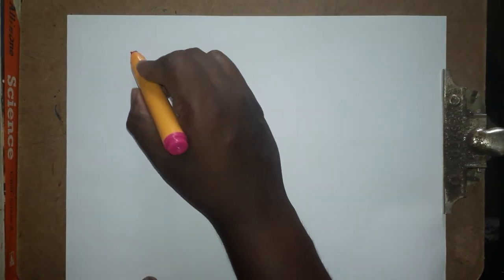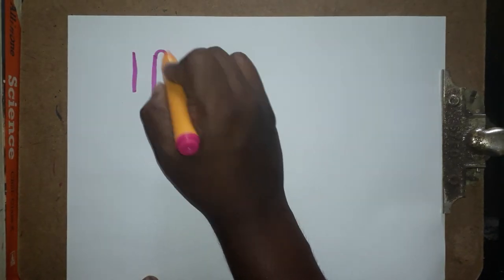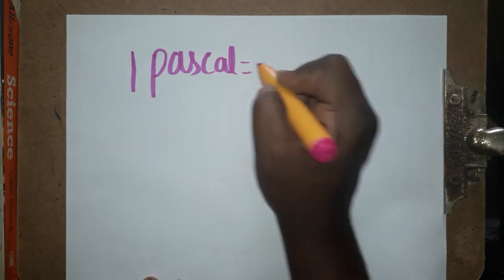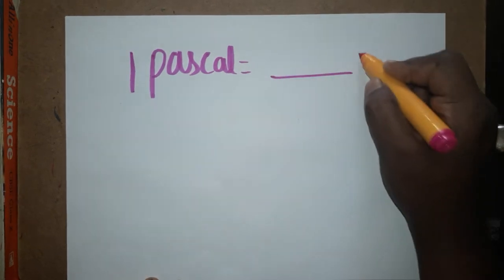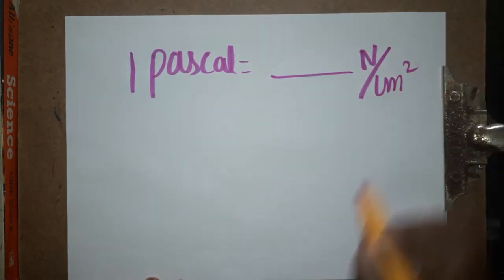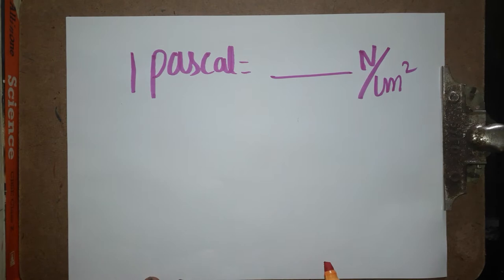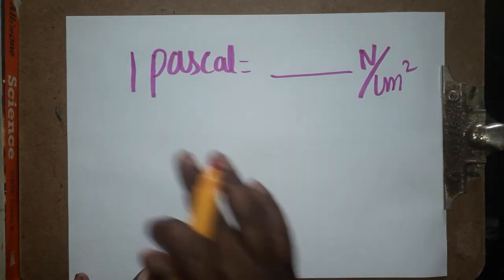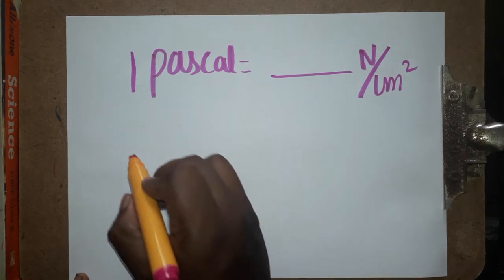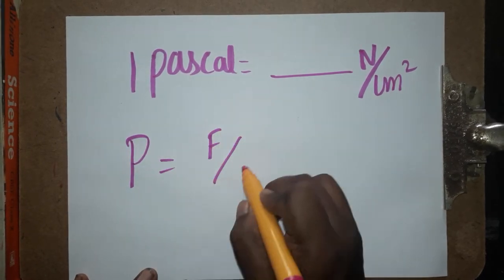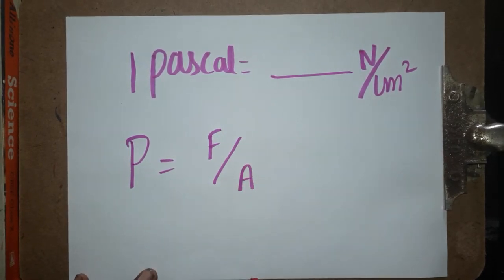Hello students, today we are going to see: one pascal is equal to how many newton per centimeter square. First we will see what is pascal, then we will learn the conversion. Pascal is a unit of pressure. Pressure is equal to force per unit area.